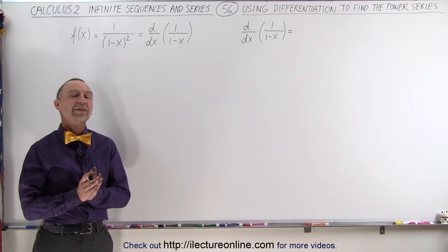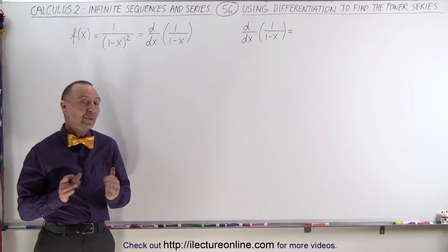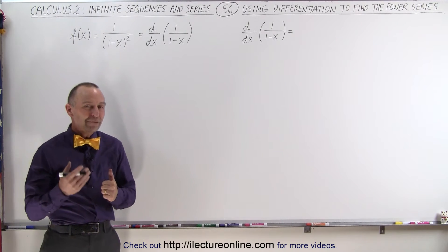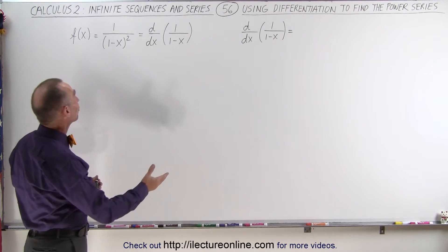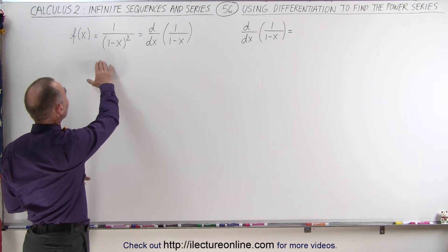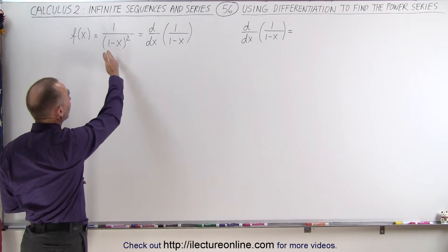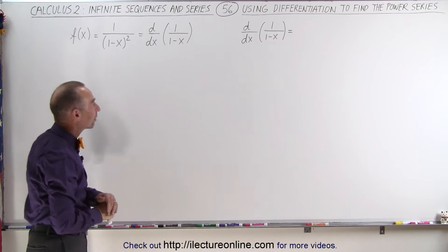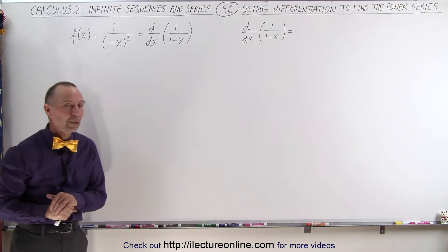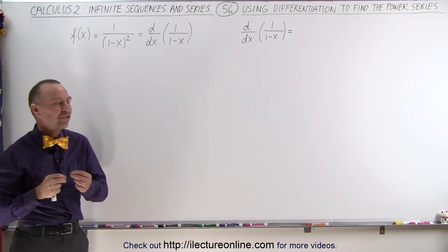Welcome to ElectronLine. Sometimes we can use a different trick to find the power series of a function such as f of x equals 1 over the quantity 1 minus x squared. We can use differentiation.